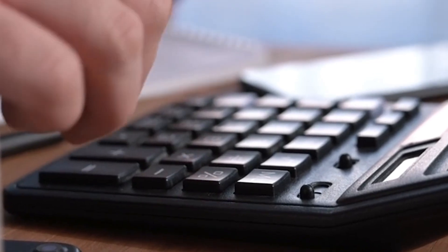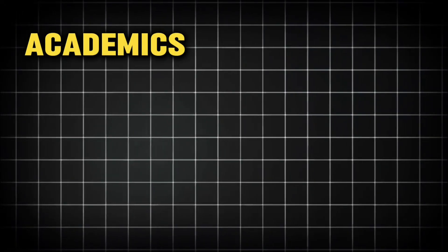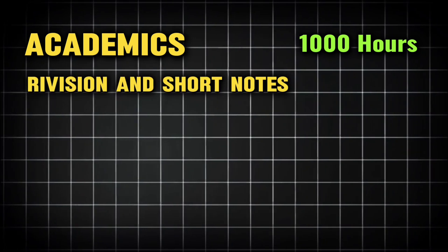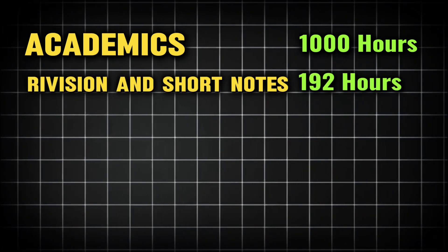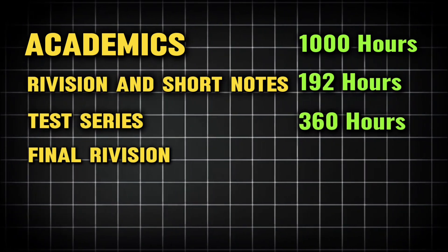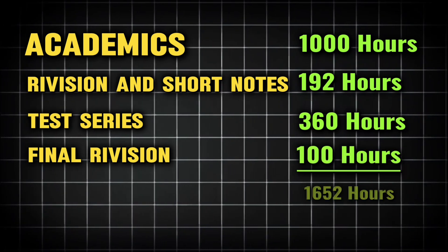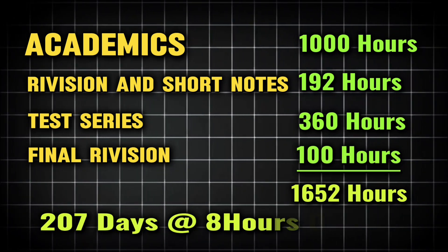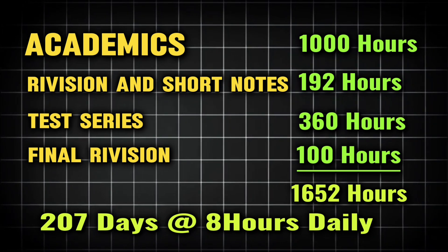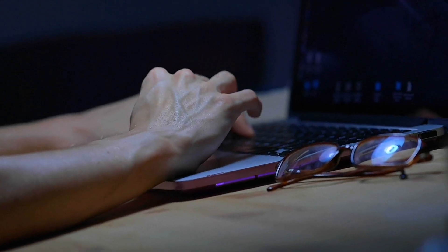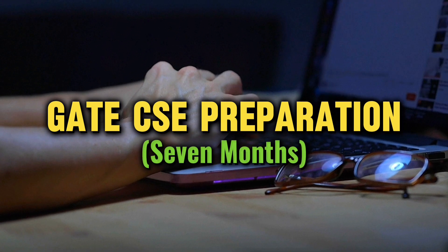Let me calculate the total number of hours: academics for Levels 1, 2, 3, and 4 total 1000 hours; cyclic revision and short notes are 192 hours; test series completion is 360 hours; and final revision is 100 hours. This comes to 1652 hours, which is 207 days of preparation provided 8 hours are given daily. Hence, you may complete your GATE CSE preparation in approximately 7 months.